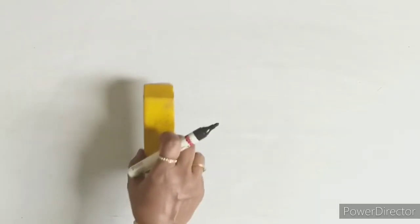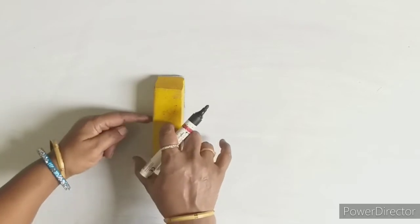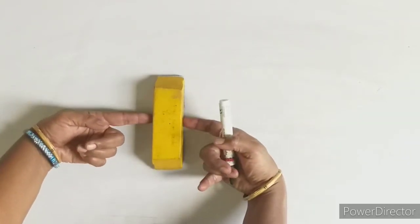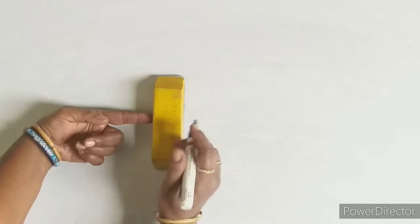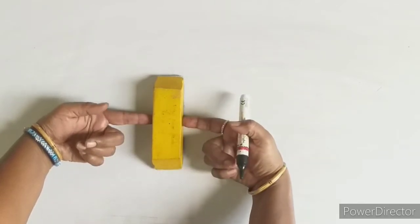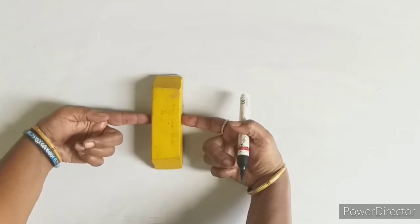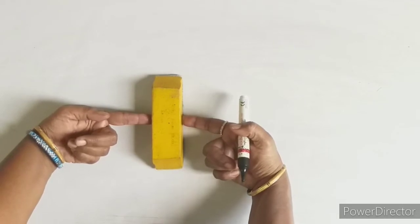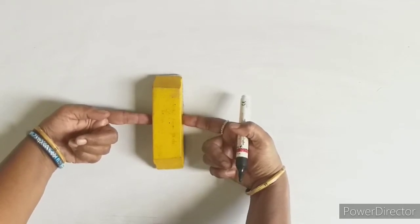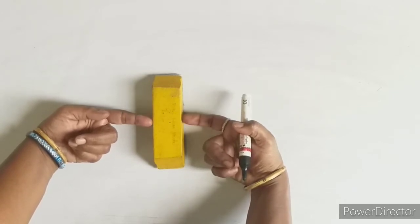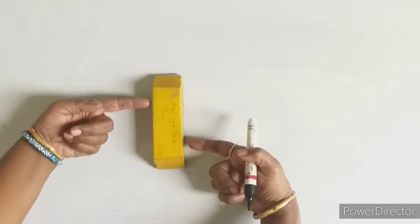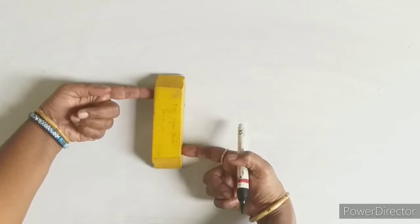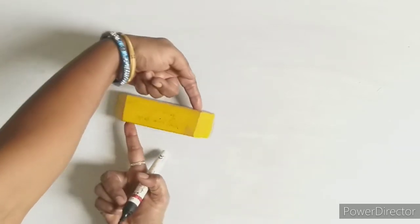Let me take a body and explain this. This is the line of action of force. If I apply equal and opposite forces with the same line of action at the same point, the body will not move and will not rotate. But if the line of action of force is not the same and two equal and opposite forces are applied, the body will start rotating.